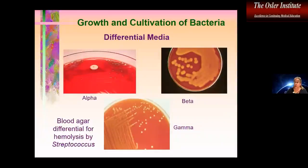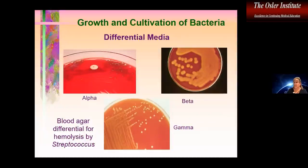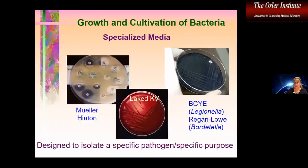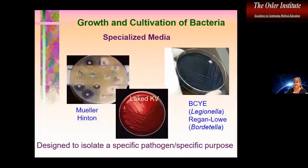Interestingly, blood agar is actually differential as well — when we discuss streptococci, we'll talk about the different types of hemolysis, and in that regard blood agar helps differentiate among the streptococci. We also have lots of specialized media, including buffered charcoal yeast extract and Regan-Lowe media, which we'll discuss when we talk about particular organisms. Much of our anaerobic media is also specialized. We also have specialized media for susceptibility testing, like Mueller-Hinton agar, which has a specific use rather than general-purpose specimen processing.